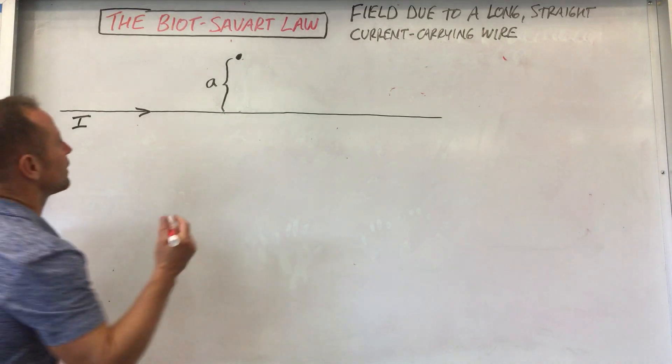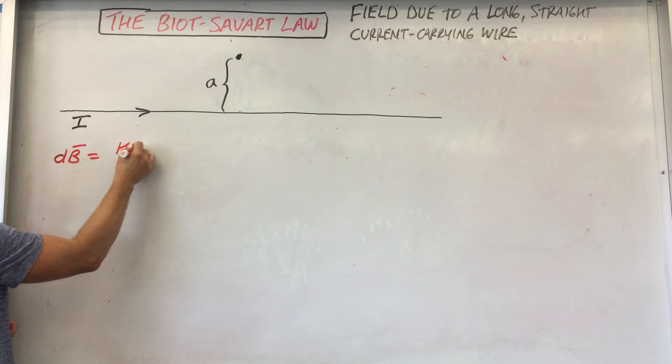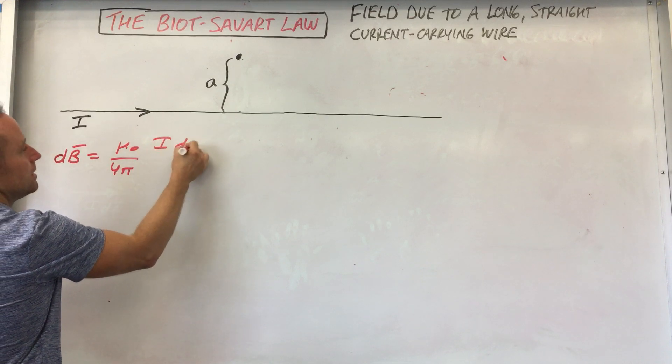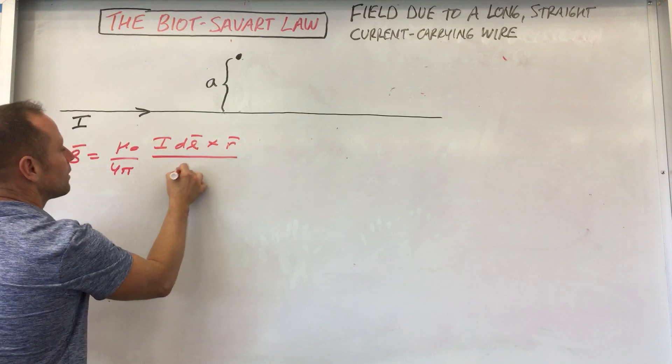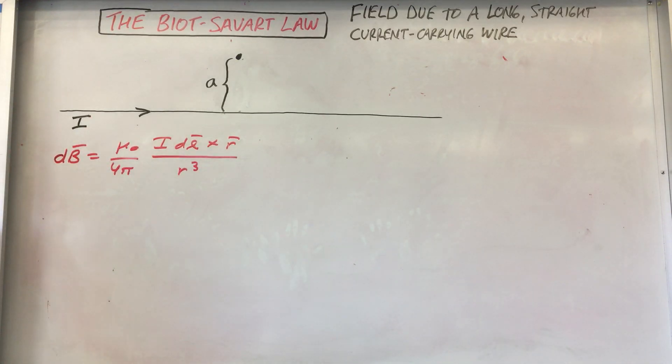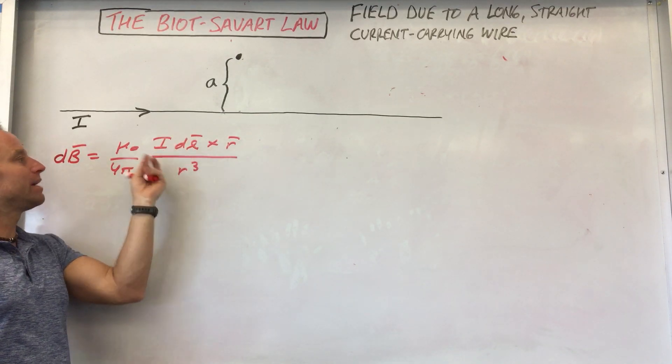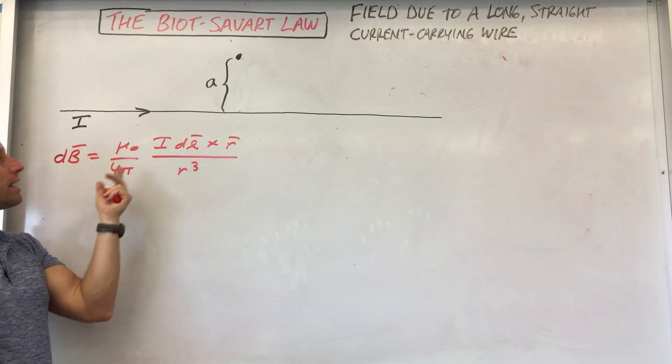So first move is, well, let's actually put down the Biot-Savart law. So deep breath and we'll put it down. So dB is mu naught over 4 pi, Idl cross r vector all over r cubed. So what I recommend, or what really helps with this, is to just be disciplined and go bit by bit to identify what each little part is.